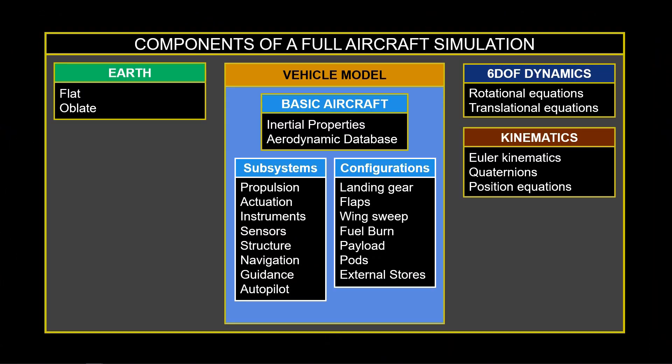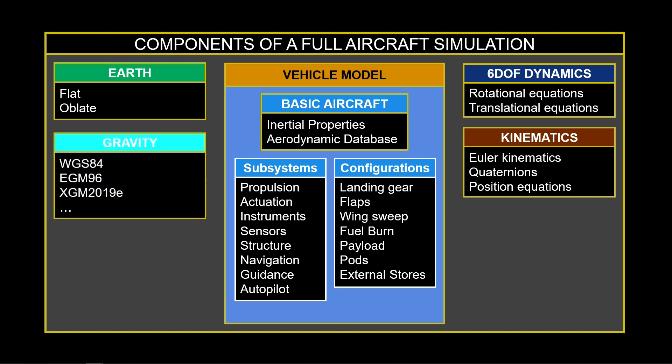We must also have a gravity model. This can be a function of position on the earth and altitude. A common model used in simulation is the World Geodetic System 1984, referred to as WGS-84.